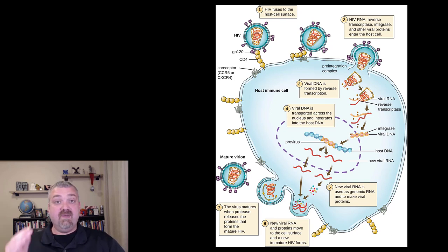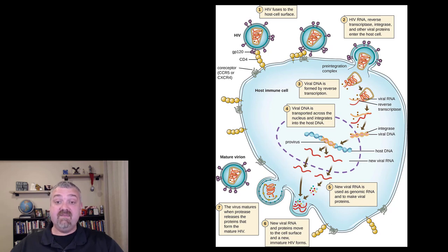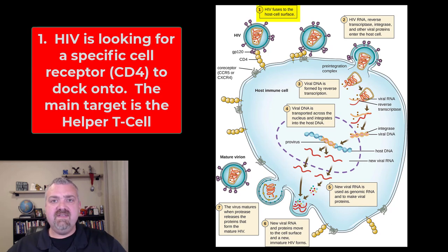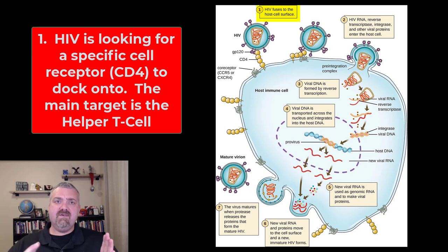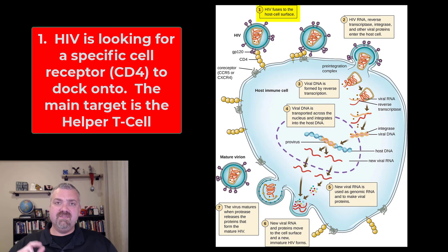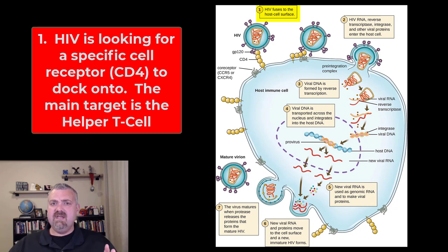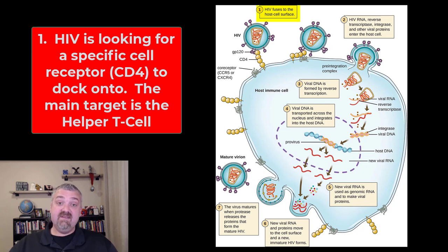Here we see the actual infection process. You may want to watch this a couple of times because this will teach you not just about HIV but about how retroviruses work in general. Step one: the HIV fuses to the host cell surface, and that's why HIV is only looking for CD4 positive cells — specifically helper T cells. Macrophages and dendritic cells can also be infected, but we'll focus on CD4 positive helper T cells. This is why HIV does not infect your CD8 cytotoxic killer T cells, nor all your other cells.